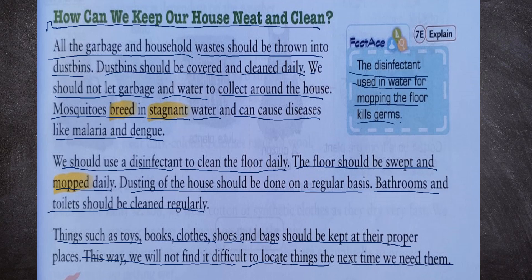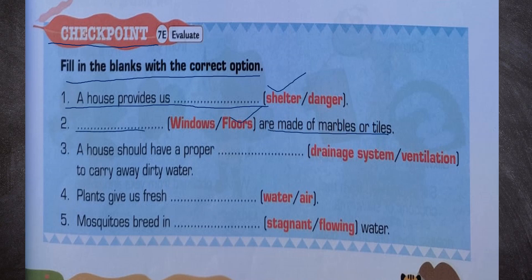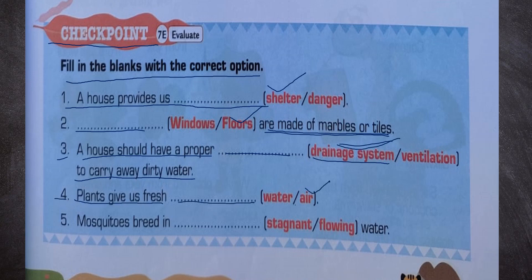Checkpoint 7E — fill in the blanks with the correct option. Number 1: a house provides us shelter. Number 2: floors are made of marble or tiles. Number 3: a house should have a proper drainage system to carry away dirty water. Number 4: plants give us fresh air. Number 5: mosquitoes breed in stagnant water.